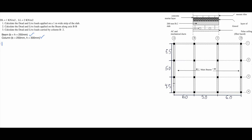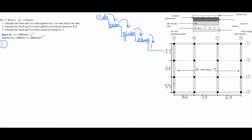Before answering the questions, here's the idea. We usually transfer the load from slab to beam, and from beams into girders if any — here we don't have any girders — and from girders into columns as reactions. And then from columns into foundation footings.